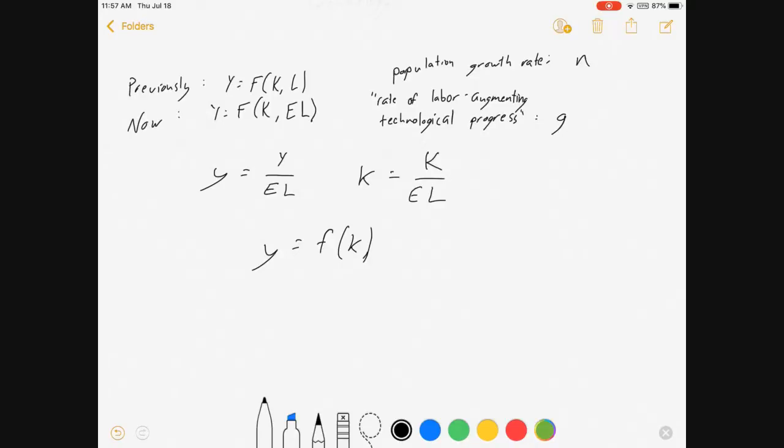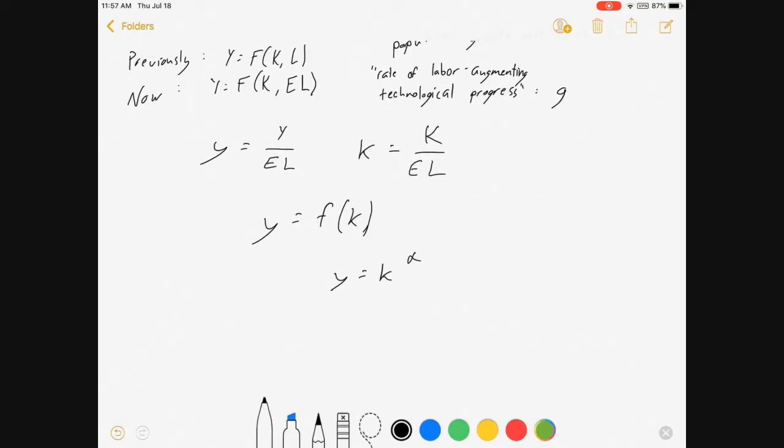Now, if this were Cobb-Douglas, then it'll probably still look something like this. Where y is equal to little k to the alpha with these definitions of y and k. That's if it's Cobb-Douglas. So, we don't have to have that. But I'll stick with it for this video.